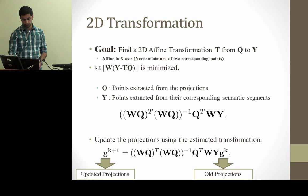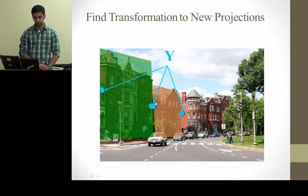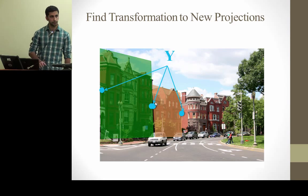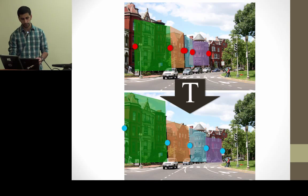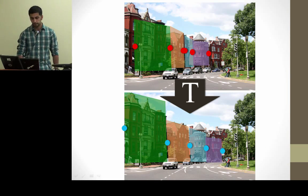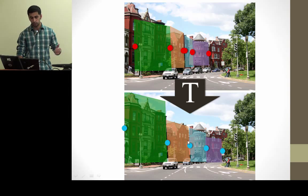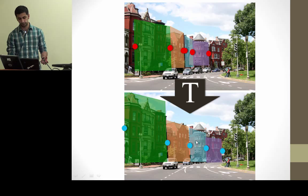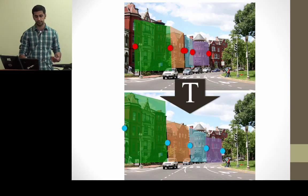The old projections are multiplied by the transformation to yield updated projections. Relying on the reliable pairs, we find a transformation that brings their projections to align with their corresponding segments. We then use the updated projections as input to our method again, and keep iterating until convergence — defined as the transformation becoming very close to an identity matrix.